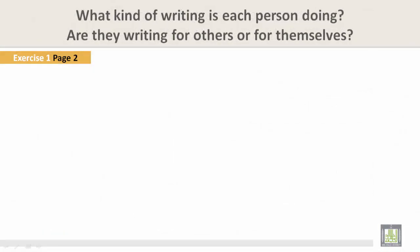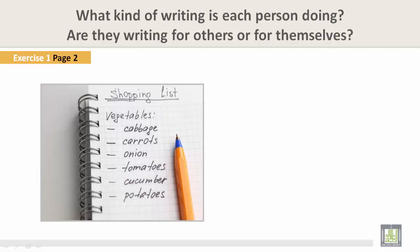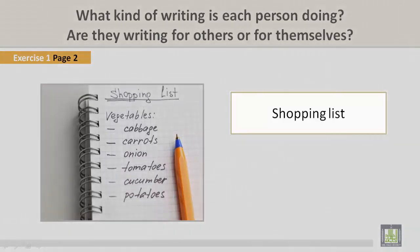Let's take a look at another picture. In this picture we see a shopping list of vegetables such as cabbage, carrots, onions, tomatoes, cucumbers, and potatoes. Clearly this is a shopping list. He or she is writing for himself or herself.